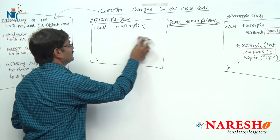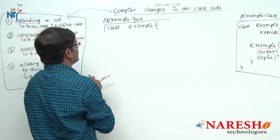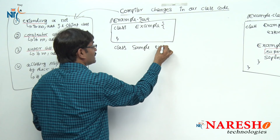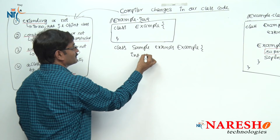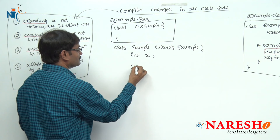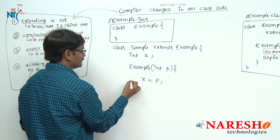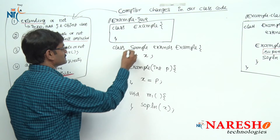Now let us see one more last test case. I am taking two classes. Class Example — empty class. And another class called Sample which is a subclass of Example. Inside Sample I create a non-static variable int x, a constructor Sample(int p), and inside the constructor I write x = p. Then I write a method void m1, and inside this method I write System.out.println(x). This is a small class.